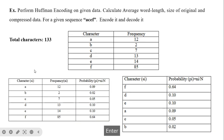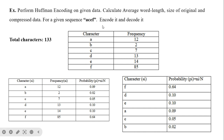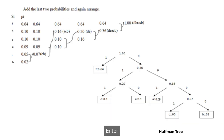Now we will see an example. The problem: perform Huffman encoding on the given data, calculate average word length, size of the original and compressed data, and for the sequence ACF encode and decode that signal. Total characters are 133. F is repeated most frequently — 85 times — and B is repeated very infrequently. We calculate the probability of each character by dividing its count by 133, then arrange probabilities in descending order to begin building the Huffman tree from the bottom.